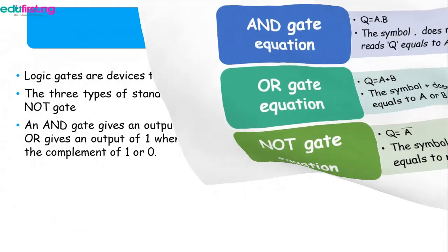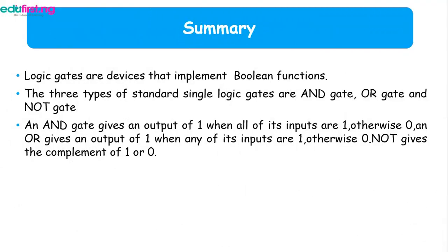So far, so good. We've spoken about logic gates that are devices that implement boolean functions. Spoken about the three types of standard single logic gates, which are AND, OR, and NOT. Spoken about the AND gate that gives an output of 1 when all of the inputs are 1, else it gives 0.